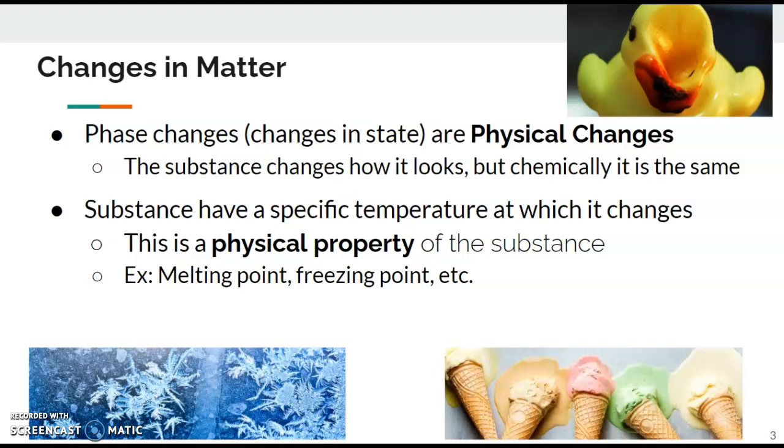Substances have specific temperatures at which they change. Once again using our water example, water freezes at a specific temperature and it boils at a specific temperature. This is a physical property of substance. Each substance, whether it be water, iron, helium, or any elements, they all have a specific temperature at which they change into their different forms. Once again, that's a physical property of a substance.